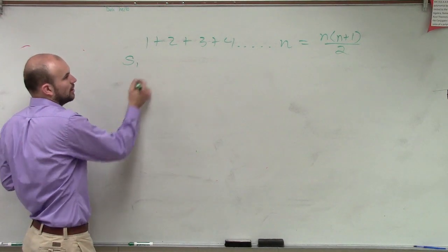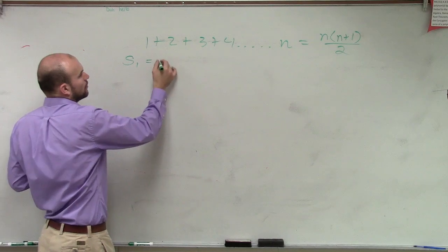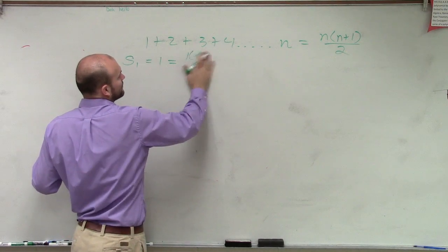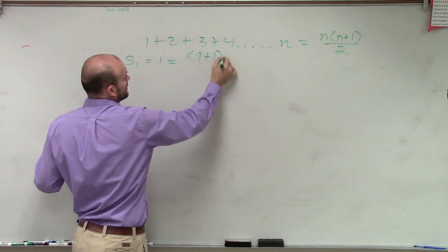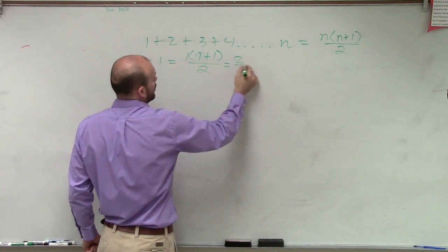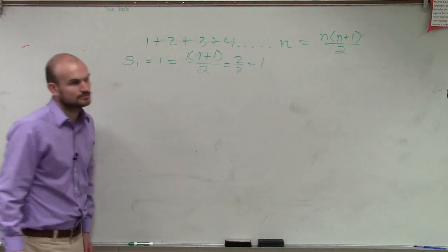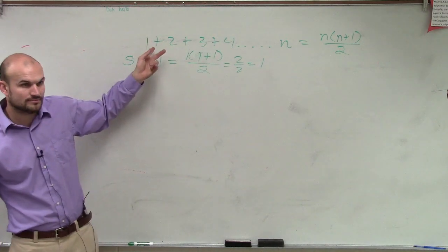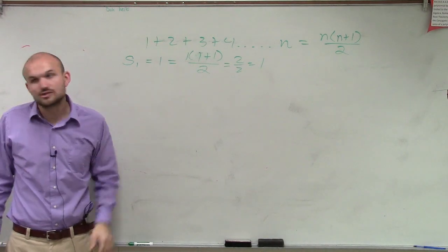So we say s of 1 equals 1, which equals 1 times 1 plus 1 divided by 2, which equals 2 over 2, which equals 1. Right? So we look at our first term. Does that equal 1? So we're good.